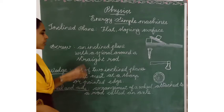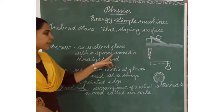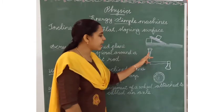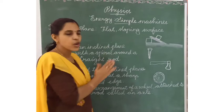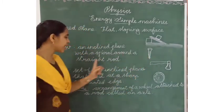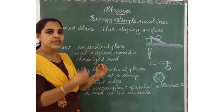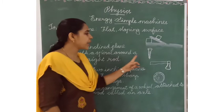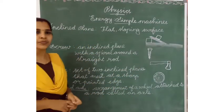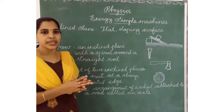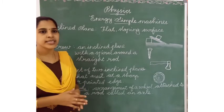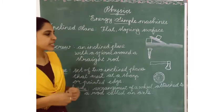Next one is Screw. What is a screw? It is an inclined plane with a spiral around a straight rod. When we look at nails, the spiral around them acts like a sloping surface — so it is an inclined plane wrapped in a spiral. What are the uses of the screw? A screw is used to join two pieces of objects together. Screws are used in our doors, vehicles, and wherever we need to join two objects.